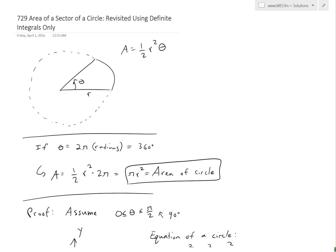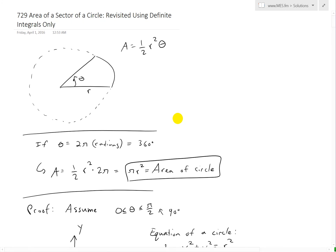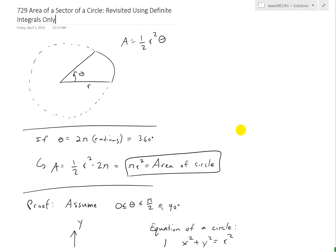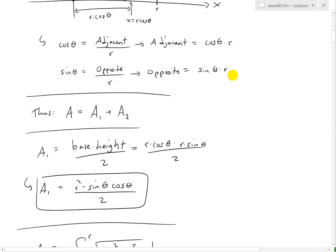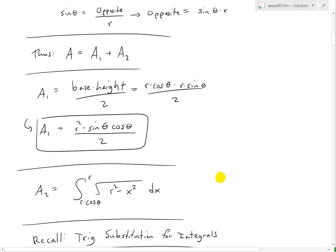Hi, it's time for another Math Easy Solution to discuss. Basically I'm going to revisit the area of a sector of a circle, which I proved in my earlier video — these are the notes for it. But I'm going to revisit it using definite integrals only. Make sure to watch my earlier video; I put the link in the description below.